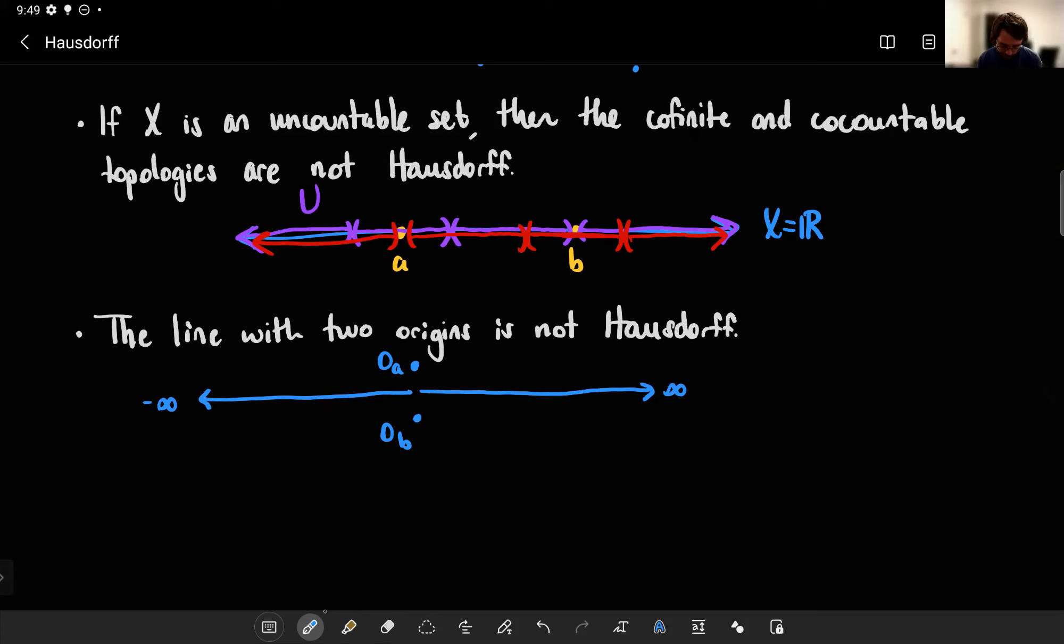And the open sets, the topology you can define on this is, okay, if you have some set that doesn't contain the origin, then it's open if it's open in R. So same story. So like that interval would be open. This interval would be open. Take the union of those and that would be open. But it starts to get weird once your sets contain one or both of the origins. So how do you define an open set in that case?